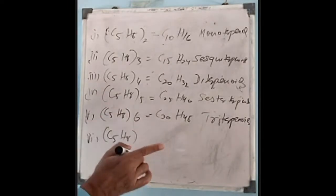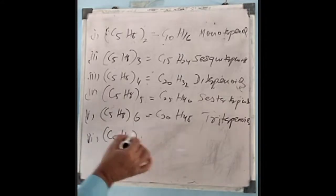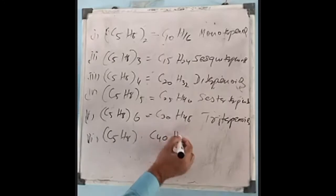For n equals 8 — there are no terpenoids with n equals 7 — so directly n equals 8, giving C40H64. This forms the tetraterpinoids, which are especially classified and given the name carotenoids.